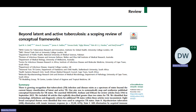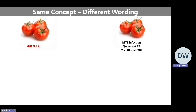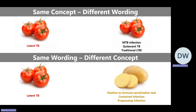This paper was published in Lancet eClinical Medicine. The simple summary identifies two problems. First is a 'you say tomato, I say tomato' problem — the same concept described with different words. Latent TB has been described as MTB infection, occult infection, traditional LTBI, and so on. Second, and more problematic, is the reverse: the same wording used to describe totally different concepts. 'Latent TB' could mean a positive immune response, a contained infection, or a progressing infection. That's where the literature stood, and this gave us the evidence base to move to the second step.